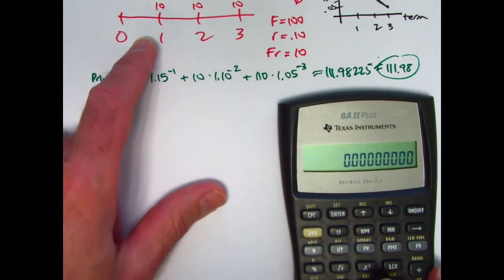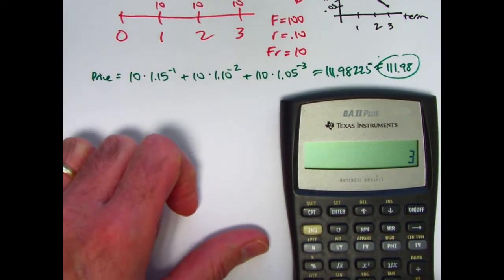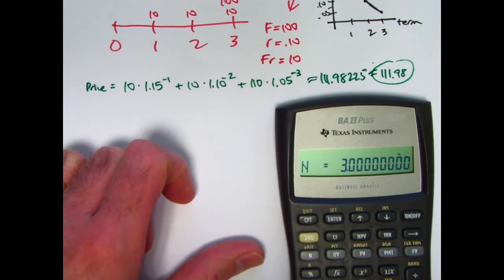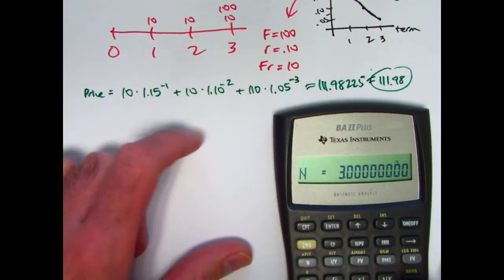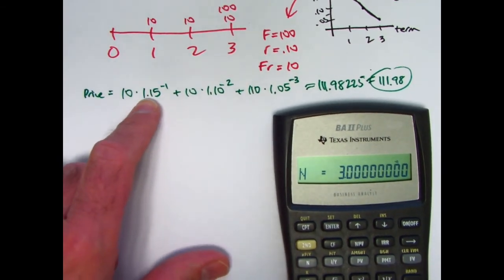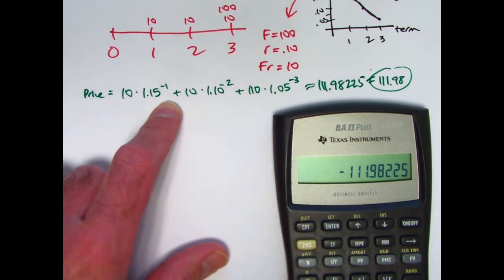All right. So we've got, first of all, we've got three periods. So three would be what goes into N. Next, we have the present value, which is the same as the price, though. You want to think of it as outgoing money. 111.98. Let me carry more decimal places. 225. Put a negative sign. Think of it as outgoing money. You are paying for this bond. So that goes into PV for the present value.